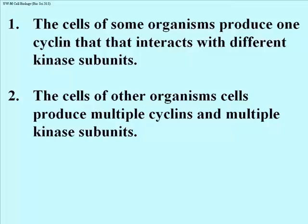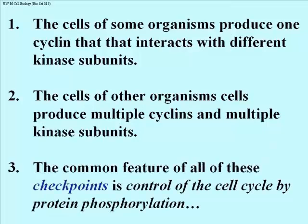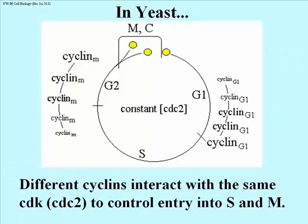Other organisms make different cyclins to interact with different CDKs. What dividing eukaryotic cells have in common are similar checkpoints controlling similar transitions during the cell cycle, and the fact that they control the cell cycle by protein phosphorylation. Here's the cell cycle of yeast, which uses a single kinase subunit called CDC2. The active cyclin G1-CDC2 kinase allows the cell to enter S phase, to replicate their DNA.